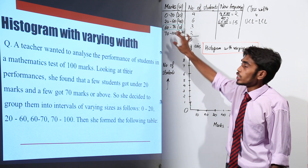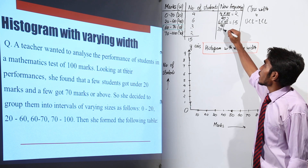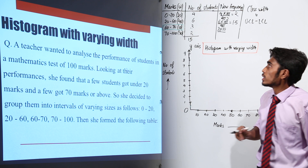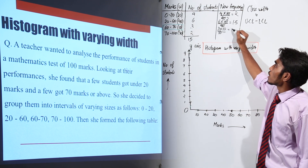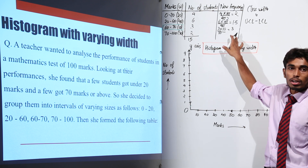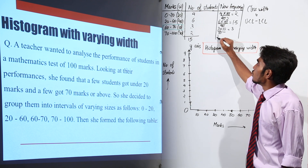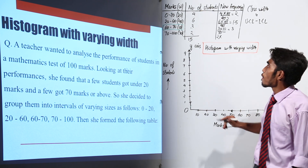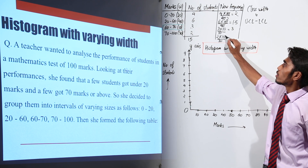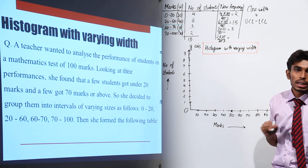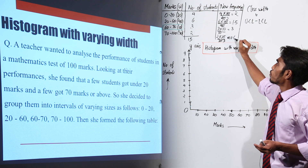Now for 60 to 70, we have 3 multiplied by 10 divided by its own class width, that is equal to 10. So 3 into 10 by 10 is nothing but 3, so its frequency will remain the same. Now for 70 to 100, we have 2 multiplied by 10 divided by 30. So 2 by 3, which is approximately equal to 0.67.